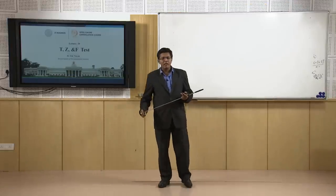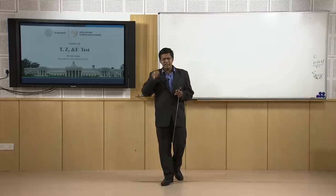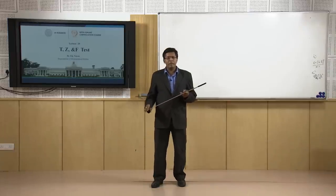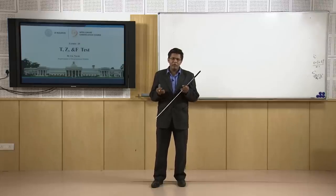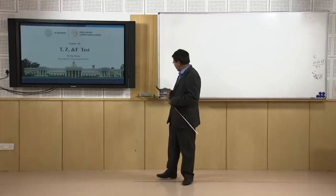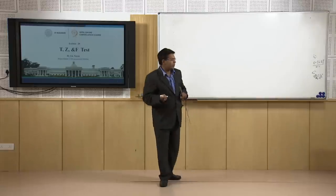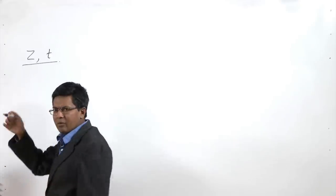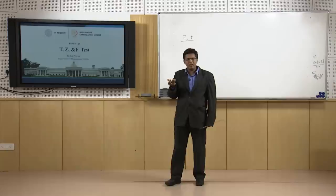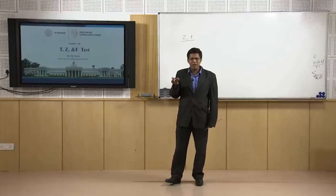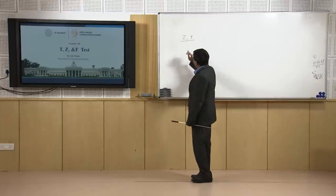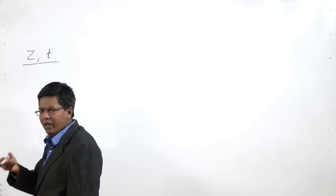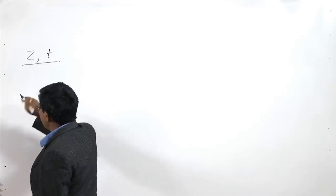Welcome friends to the session of Marketing Research and Analysis. In the last session we were continuing with hypothesis testing. Previous to that we discussed hypothesis development and then went into hypothesis testing through the Z and T test. The Z and T test are more or less similar in nature. T is used when the sample size is very small and the population standard deviation is unknown. You can think of Z as a larger T version.